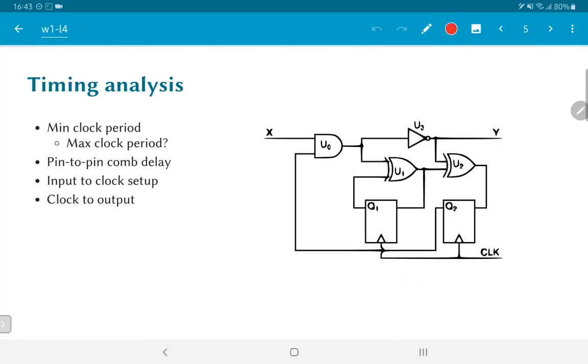A few examples of such paths are marked over here. For example, you could see that if I go out of Q1, I then pass through the gate U1 and come back to Q1. This is an example of a path which is what we would call a register-to-register path. It starts from a register Q1, goes through some combinational logic and comes back to the input of the register Q1, which we would normally call D1.